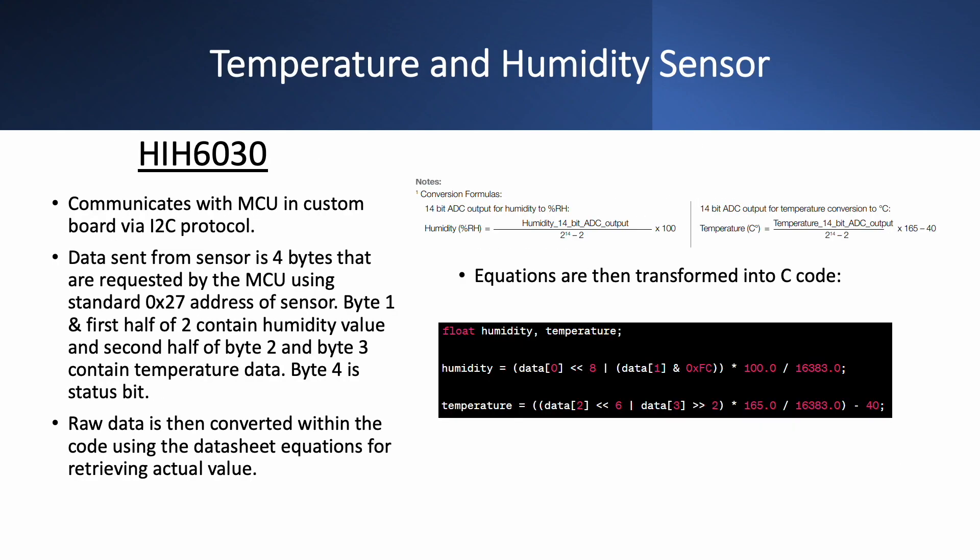For the temperature and humidity sensor we're using the HIH-6030, it communicates with the MCU via I2C protocol. This data is sent from the sensor in four bytes that are requested by the MCU using the standard 0x27 address of the sensor, which is given by the manufacturer. Byte 1 and the first half of byte 2 contain the humidity value and the second half of byte 2 and byte 3 contain the temperature data.